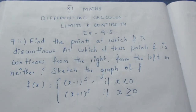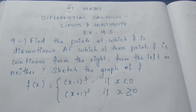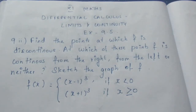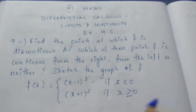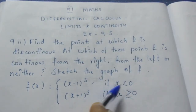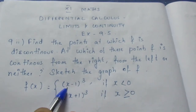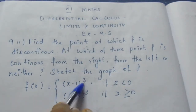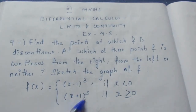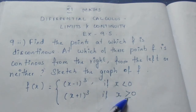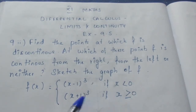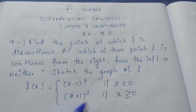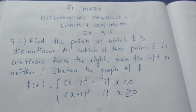So we check where f is continuous or discontinuous. f(x) equals (x minus 1) whole cube if x is less than 0. For negative numbers, f(x) equals (x minus 1) whole cube. And f(x) equals (x plus 1) whole cube if x is greater than or equal to 0, meaning for zero and positive numbers.